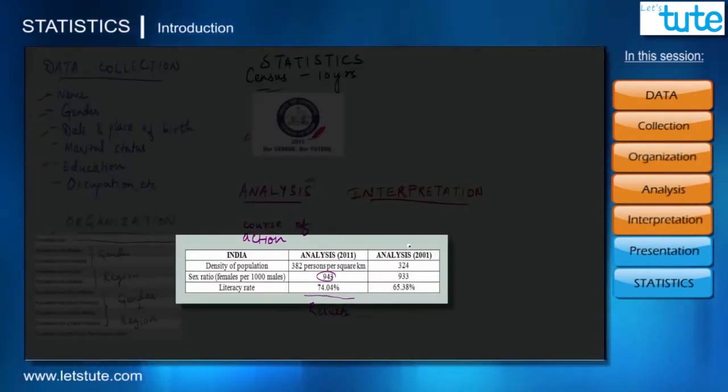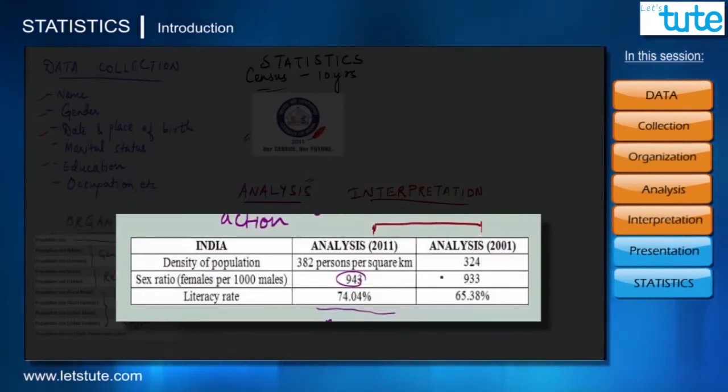While comparing the analysis data of 2001 and 2011, we can say the density of population has indeed increased, which means space for individuals is gradually decreasing. Similarly, the sex ratio has also improved but still it is very low.